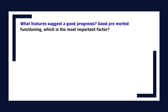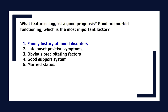What features suggest a good prognosis? Good premorbid functioning is the most important factor. Other factors include family history of mood disorders, late onset, positive symptoms, obvious precipitating factors, good support system, and married status.